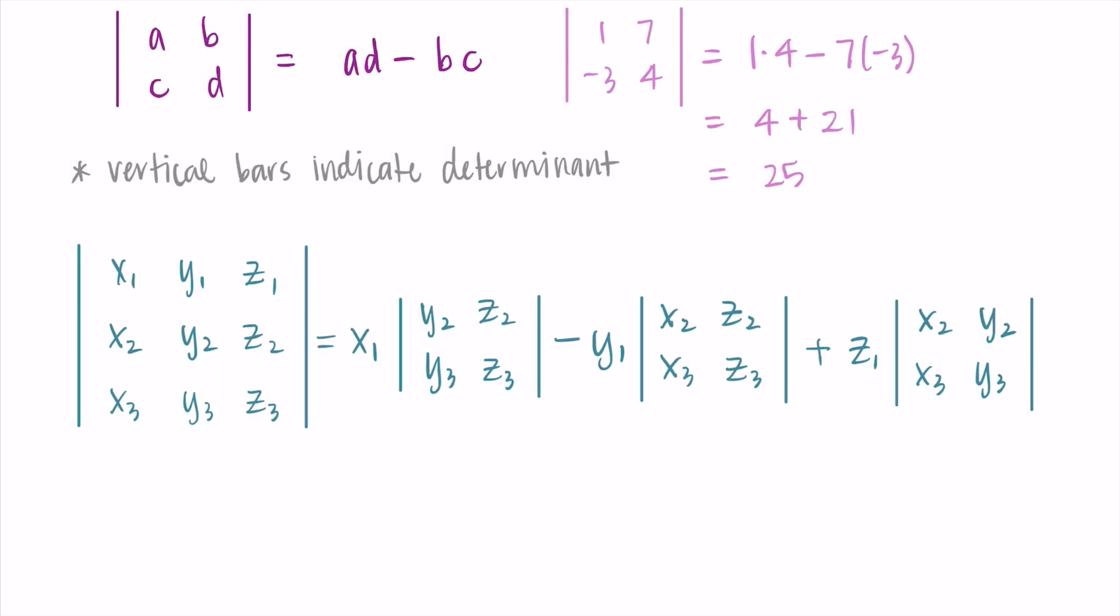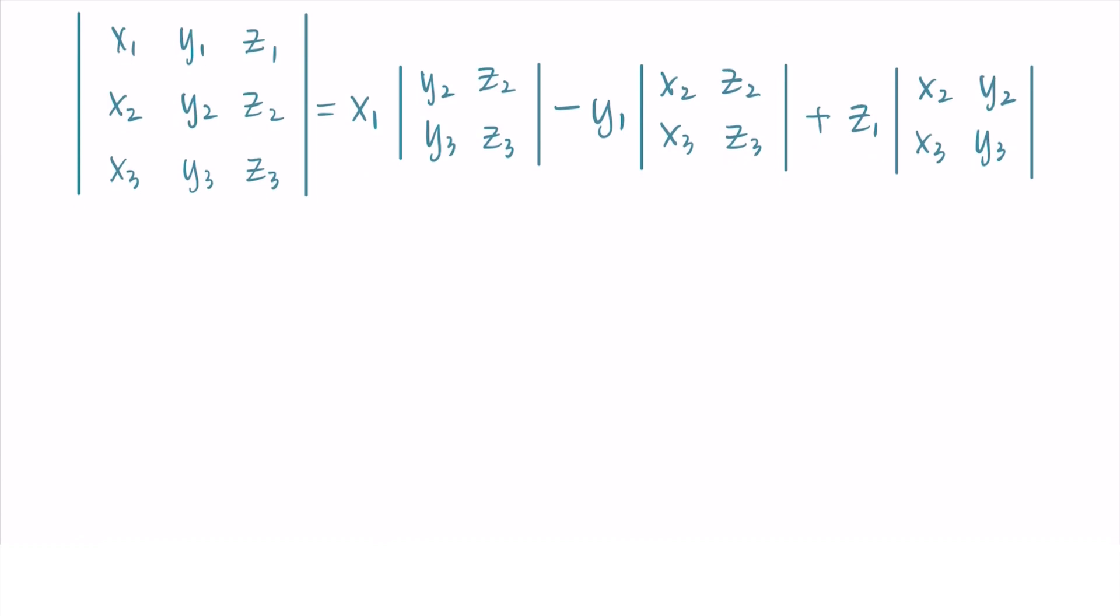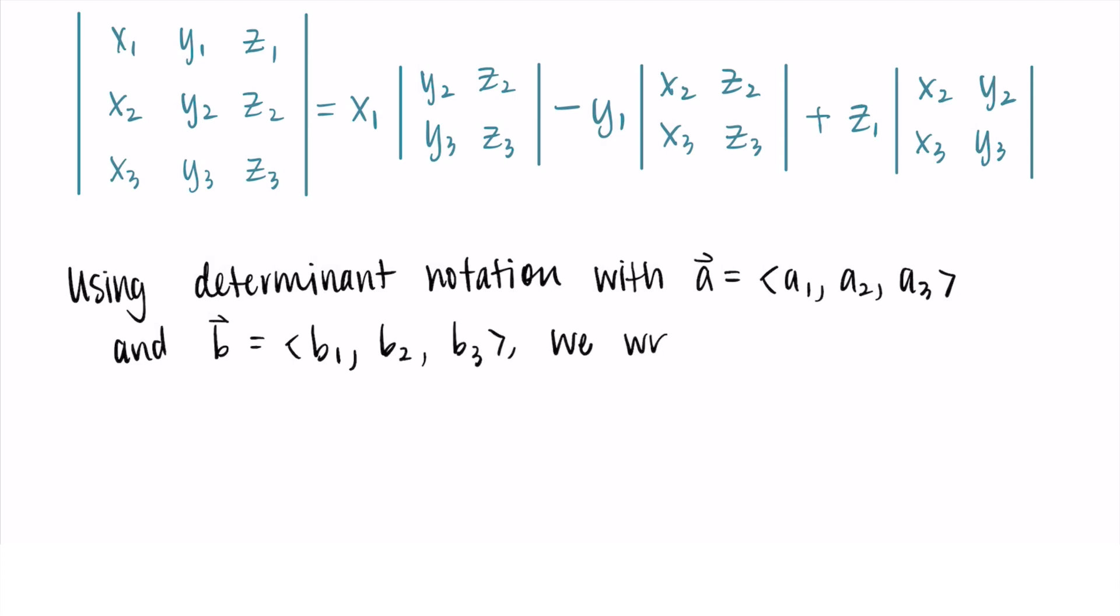So how we are going to apply this to our specific cross product notation is we're going to replace one of the rows with A₁, A₂, A₃, and the other row with B₁, B₂, B₃. And this is going to get us our cross product, which is a much better way to write it out than having that complicated formula to remember. So we're going to use determinant notation with A, the vector A, and the vector B.